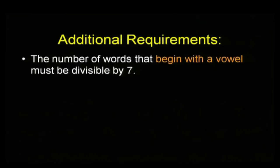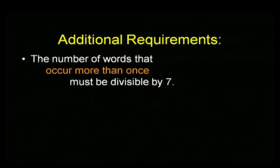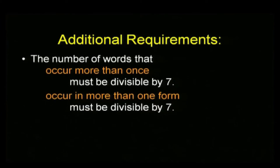How many are still playing with me? I've got some additional rules I want your assignment to meet. I want the number of words that begin with a vowel to be divisible by seven. I want the number of words that begin with a consonant to be divisible by seven. I want the number of words that occur more than once to be a multiple of seven exactly. And those that occur in more than one form divisible by seven, and those that are in only one form divisible by seven.